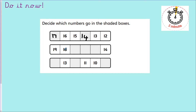Let's have a look at the next one. Let's see if the pattern is going forwards or backwards: 19, 18 — it's going backwards again. The numbers are going smaller by one. Let's fill in the missing numbers: 19, 18, 17, 16, 15, 14. Excellent, well done.